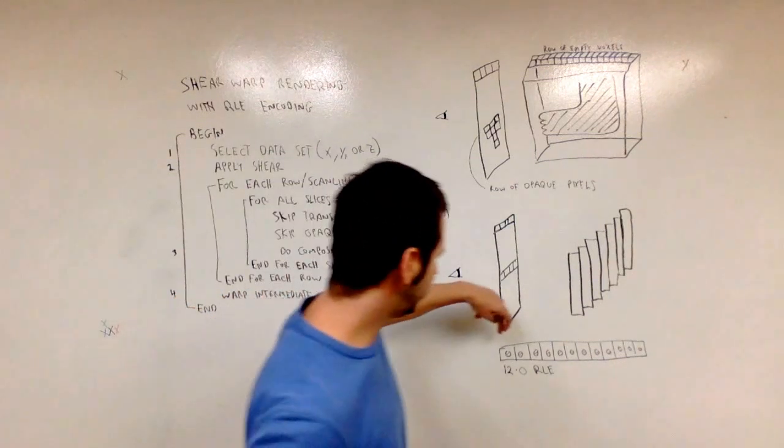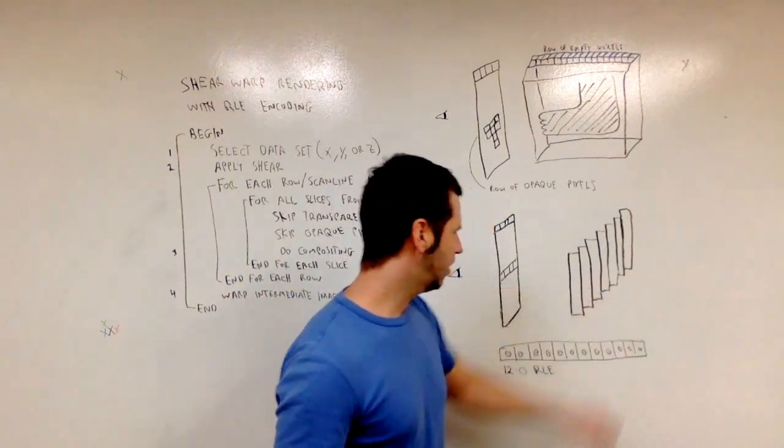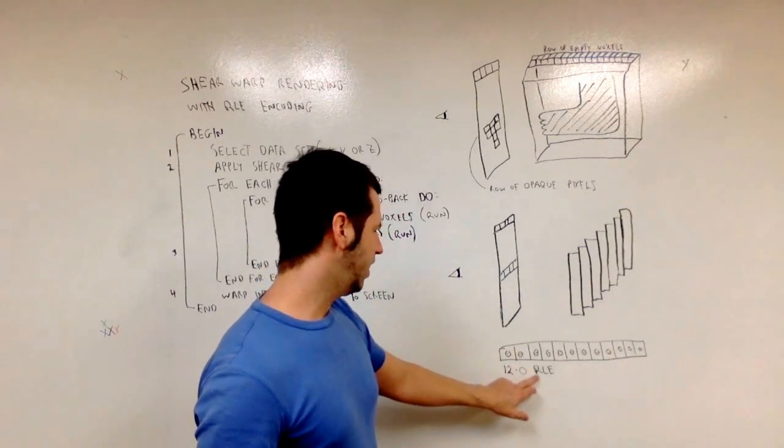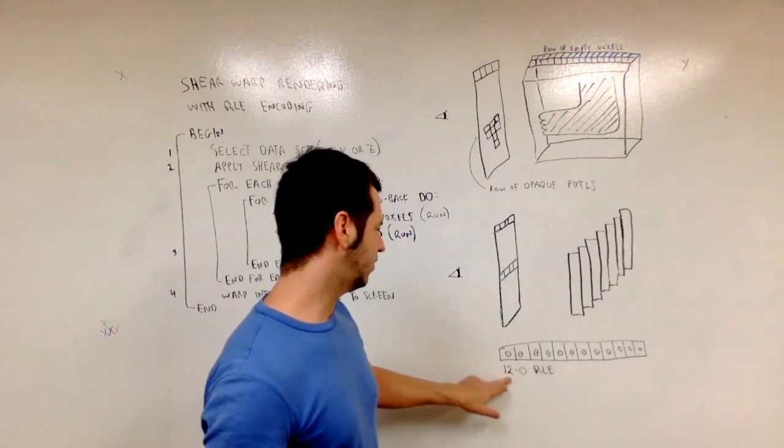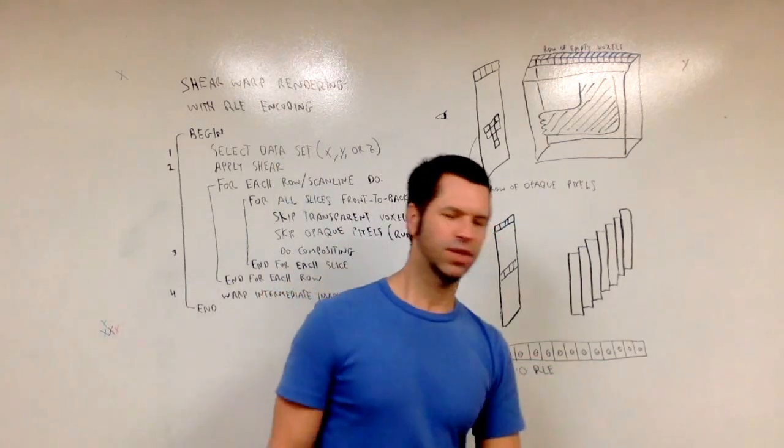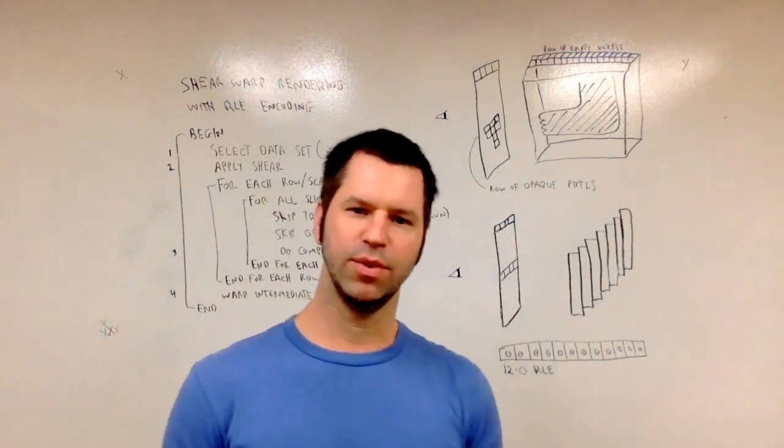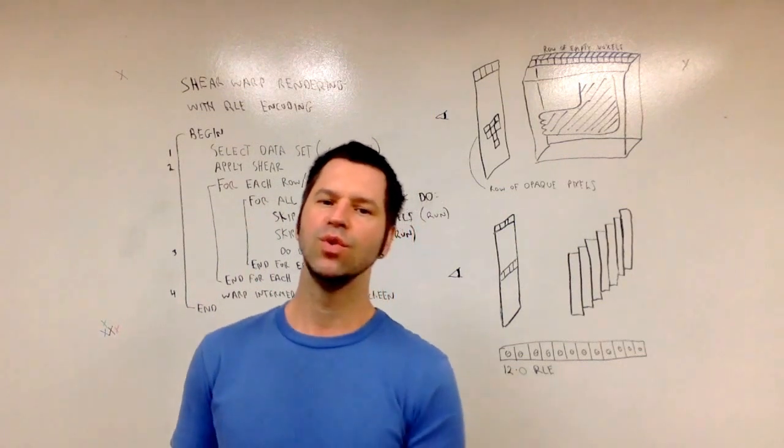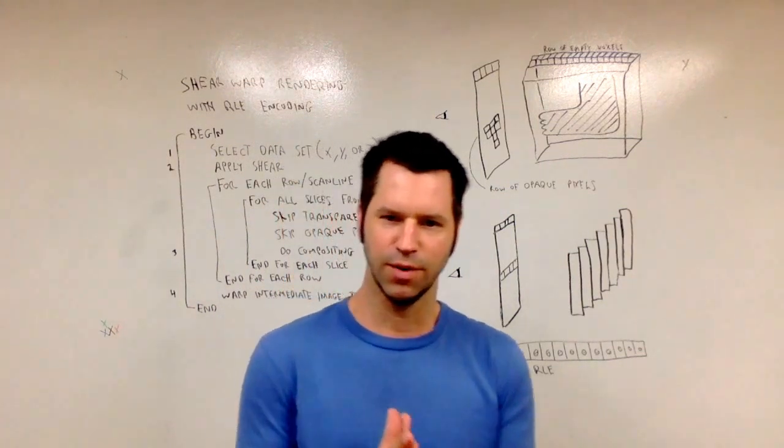And this is called a run of zeros. And the run has length twelve in this case. So it's a very simple example but this is a very simple data compression technique. And it can be used in the context of the shear warp factorization algorithm.